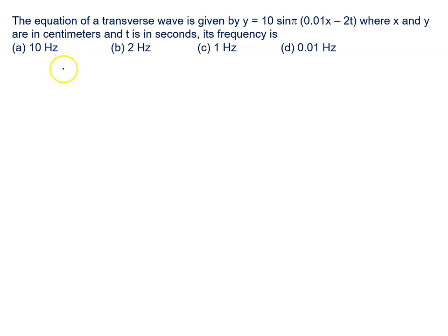The equation of a transverse wave is given by y equal to 10 sin pi 0.01x minus 2t, where x and y are in centimeters, t is in seconds. Then what is the frequency?